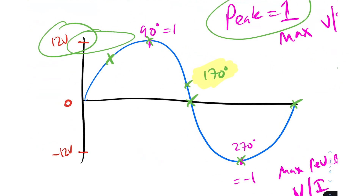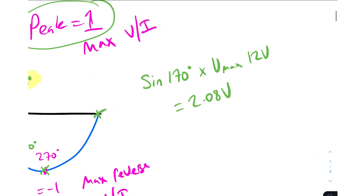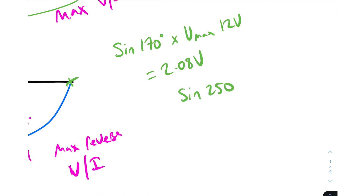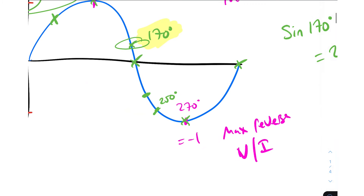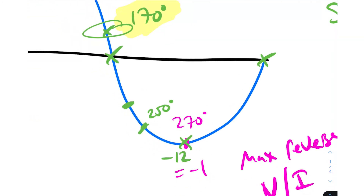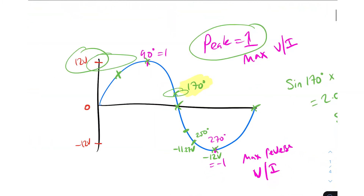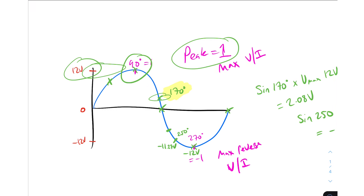And if you think about it — if the peak up here is 12 volts, this point near 170 degrees is going to be about 2 volts, which checks out. Let's do the same for 250 degrees. We're going to find the voltage at 250: sine 250 multiplied by 12 volts gives us a reverse voltage of 11.276 volts. And you can see — if minus 12 volts is the negative peak, then this point is at about 11.27 volts negative. This stuff is truly amazing because one is always going to equal the peak voltage.